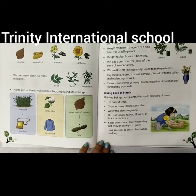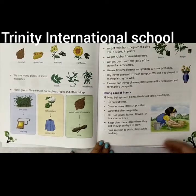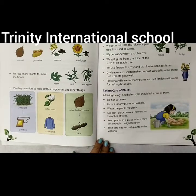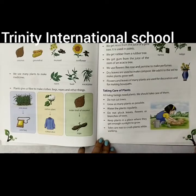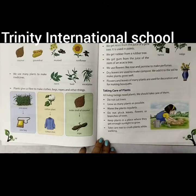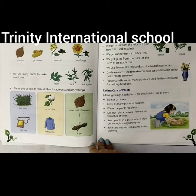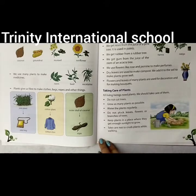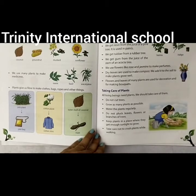Do take care of plants and follow all these points. Grow as many plants as possible. Do not cut the trees. Water the plants regularly. Do not pluck leaves, flowers, or branches of trees. Keep plants in a place where they can get enough sunlight. Take care not to crush plants while walking — be careful when walking in the garden or park.